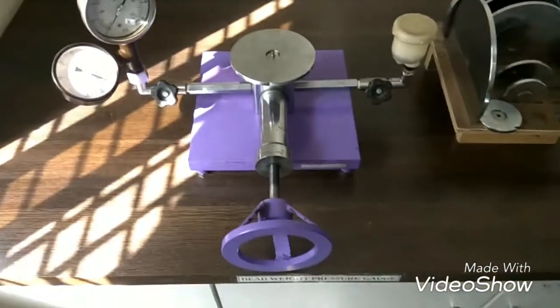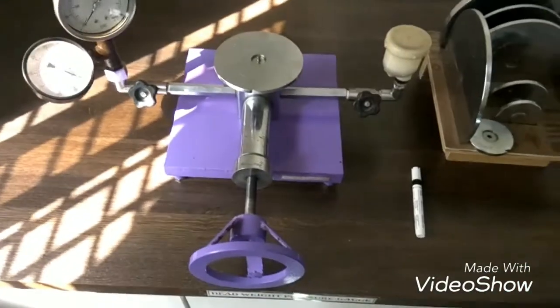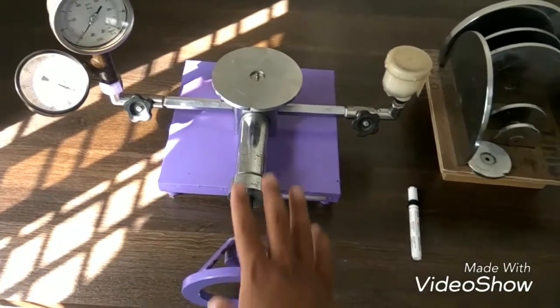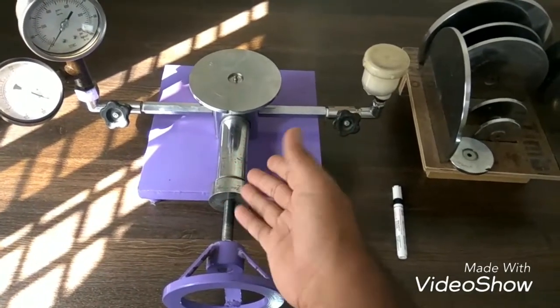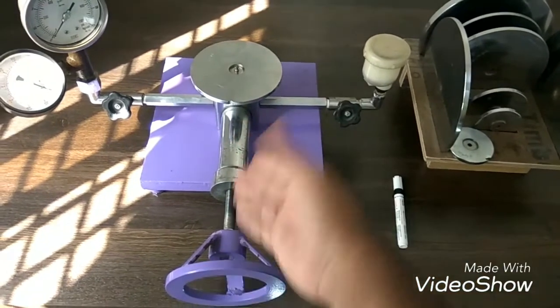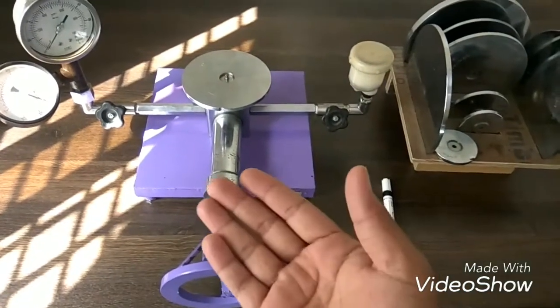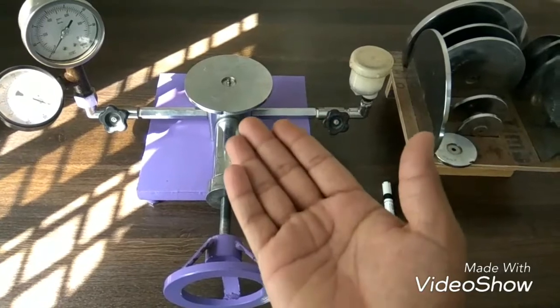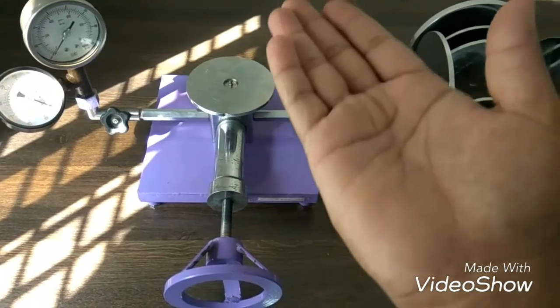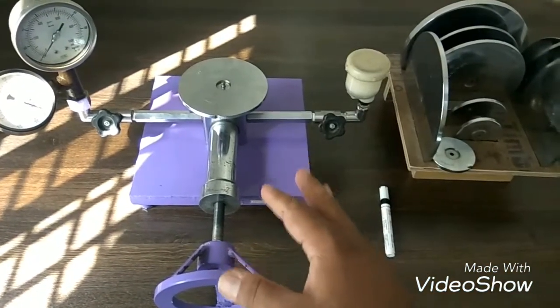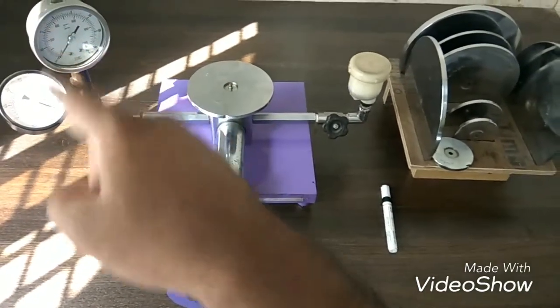Now, how it works - the basic working principle is whenever I apply pressure to the system through this handle, because of this pressure present in the system, this plate will start lifting in the upward direction. After some duration, if I am consistently applying pressure to the system, it will lift and float. The moment it starts floating, we can calibrate and measure the pressure using these two gauges.